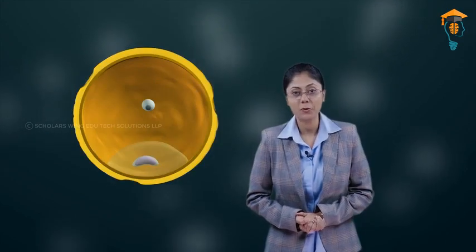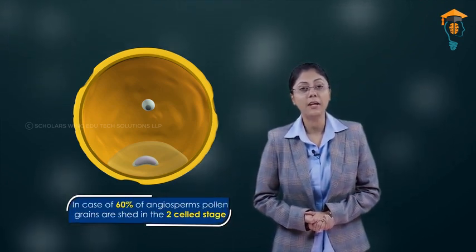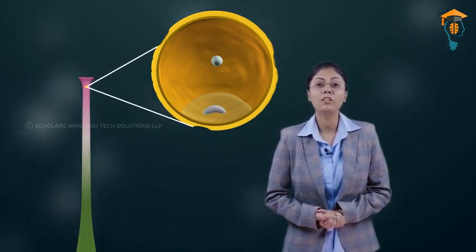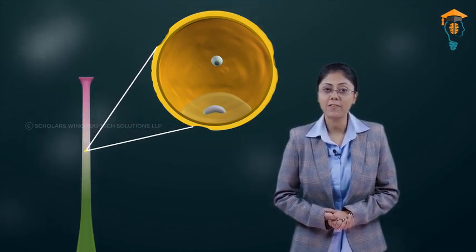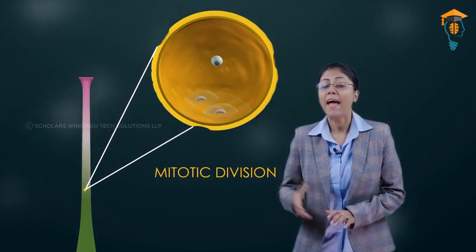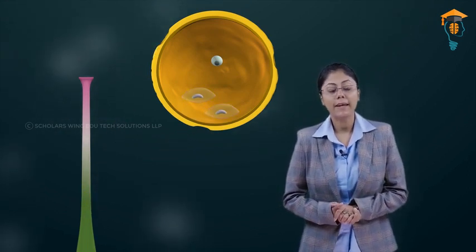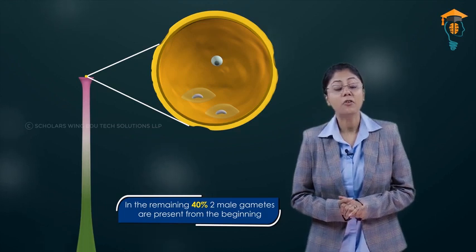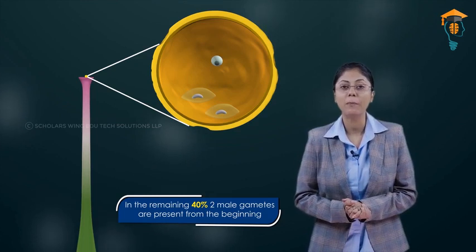Remember that in 60% of angiosperms, the pollen grains are shed in the two-cell stage. In these 60%, as the pollen tube germinates through the tissues of the stigma, the generative cell undergoes mitotic division and forms the two male gametes. But in the remaining 40% where pollen grains are shed in the three-cell stage, from the very beginning there is already the presence of two male gametes.